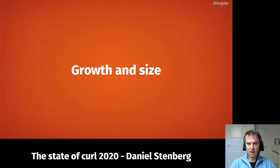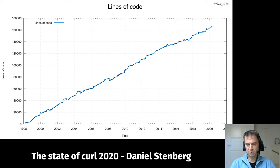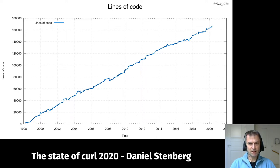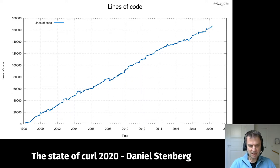So how do we do? What's the growth and size of the project? curl today in 2020 turned 22 years old just about a month ago. Here's a graph showing the source code size — file size in the source, lib, and include directories in the git repository. It's an amazingly linear graph; we're growing maybe around 20,000 lines of code in a little over two years, so roughly 10,000 lines of code per year recently.